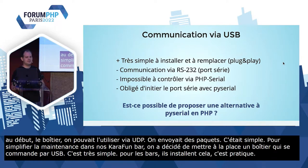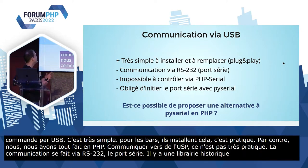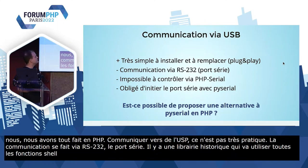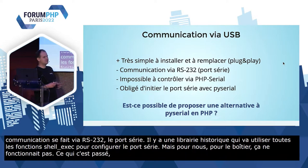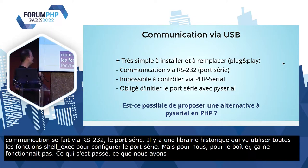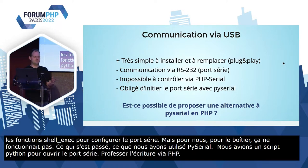La communication se fait via RS232, c'est ce qu'on appelle le port série. Il y a une librairie historique qui existe en PHP pour faire du port série, qui va utiliser des fonctions shell_exec pour lancer des commandes bash pour configurer le port série. Mais, pas de chance, avec notre boîtier en question, ça ne fonctionnait pas. Donc ce qui s'est passé, c'est qu'on a commencé à initialiser notre port série avec PySerial, une librairie Python. On avait un script Python pour initialiser et ouvrir notre port série, et après on faisait notre écriture via PHP. C'était il y a quelques années. À l'époque, FFI n'existait pas, donc la solution n'était pas là.